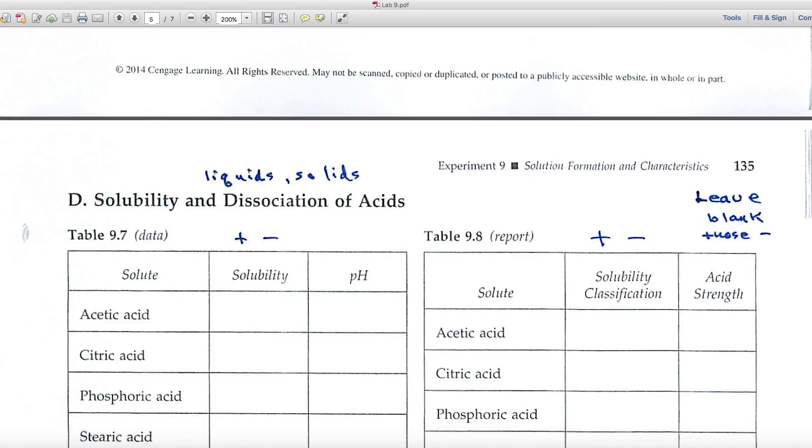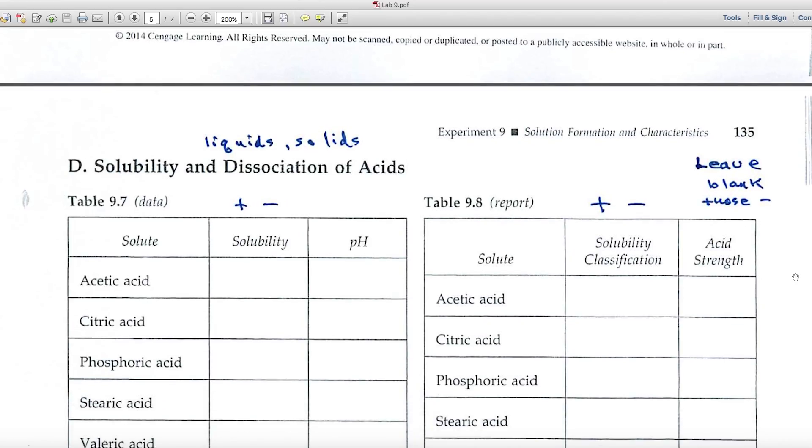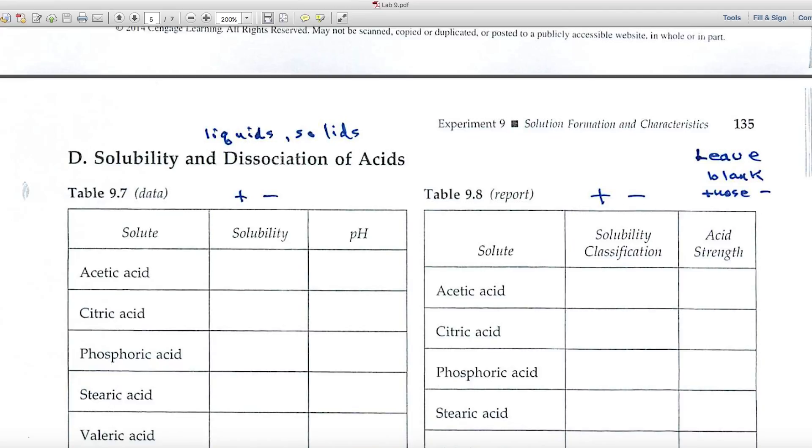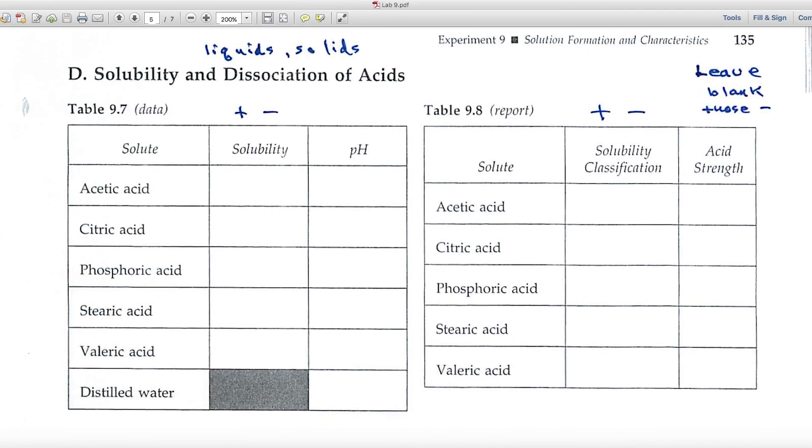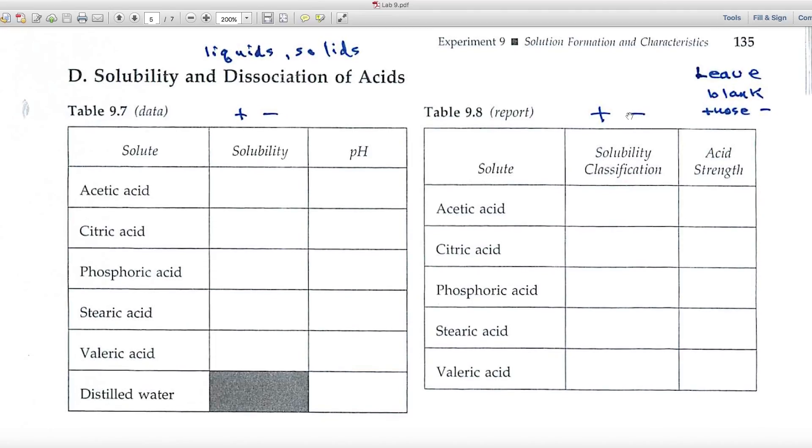Part D, the solubility and dissociation of acids. Some of these are liquids, some are solids. Solubility, plus or minus. And then, for those that are plus, you'll have pH data, and indicate that. Same thing in the report.